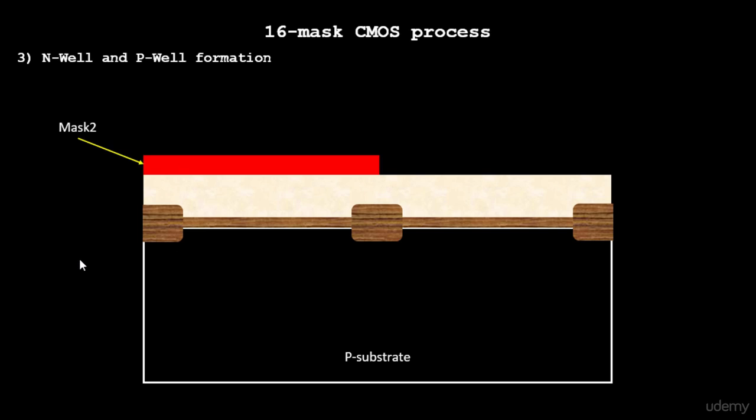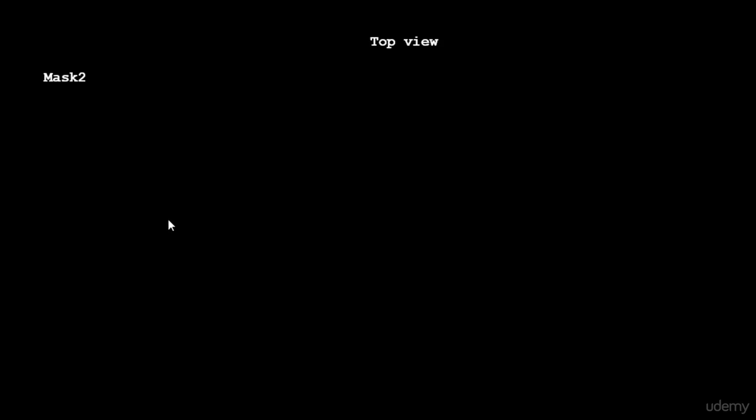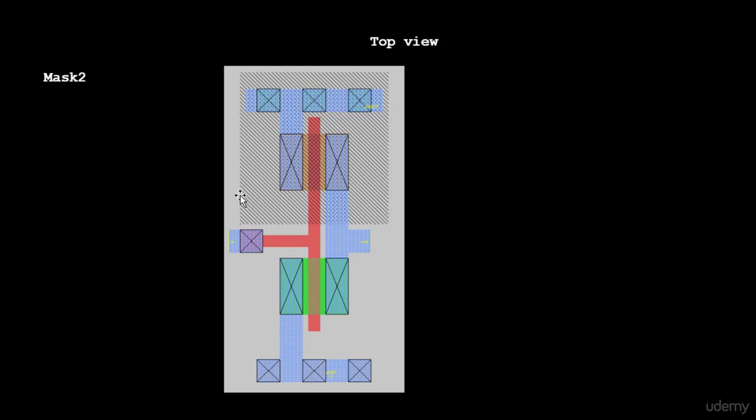In the past video we talked about how mask 2 looks in a layout. If you look into a top view of a layout, this is a CMOS inverter layout which I have drawn in Magic. If you look into this particular layout, the mask 2 will generally refer to this one.